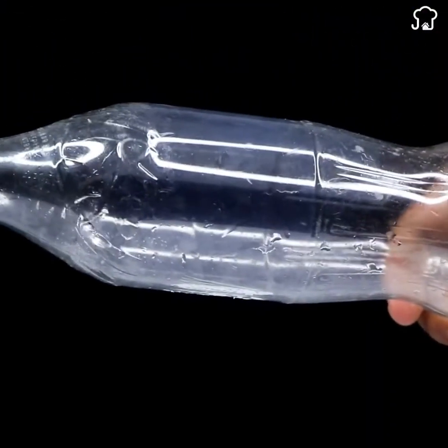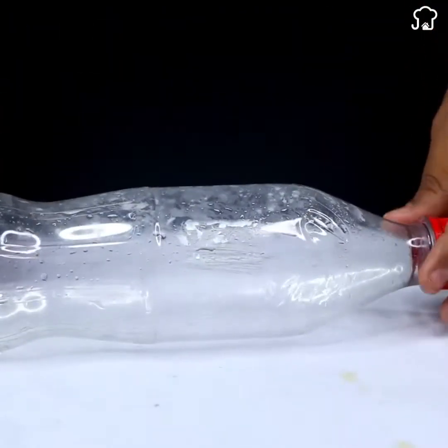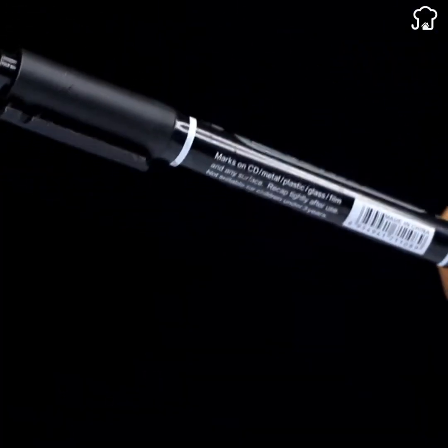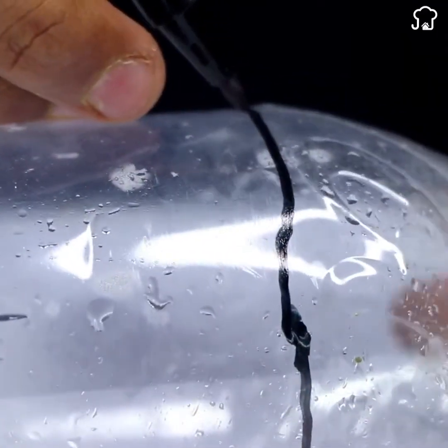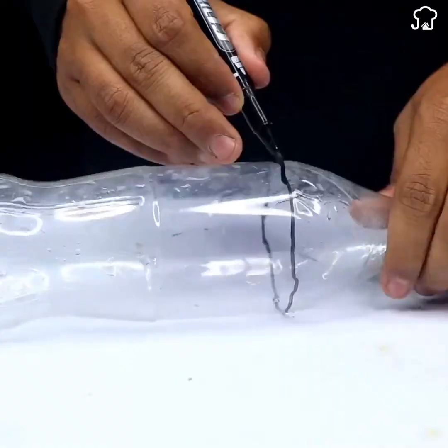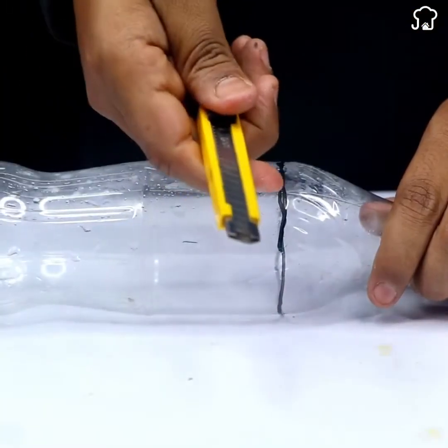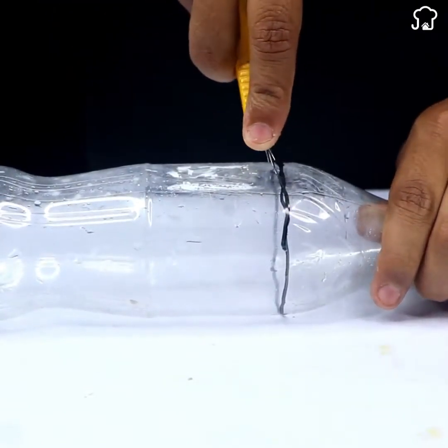To start, we'll take an empty plastic soda bottle. With the help of a marker, we'll mark a line right on the part of the bottle that looks like a funnel. Then, with a cutter, we will cut the bottle at that marked spot.